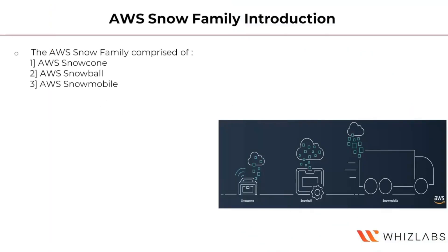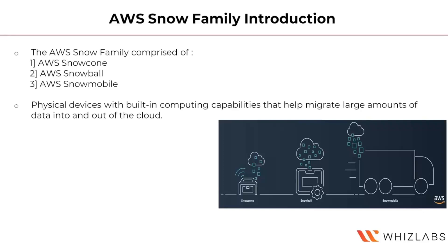AWS Snow Family includes AWS Snowcone, AWS Snowball, and AWS Snowmobile. We will discuss all three of them one by one. The AWS Snow Family is a service that helps customers undertake operations in places with unreliable network connections or in non-data center environments.